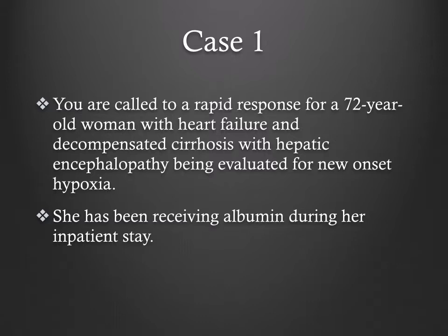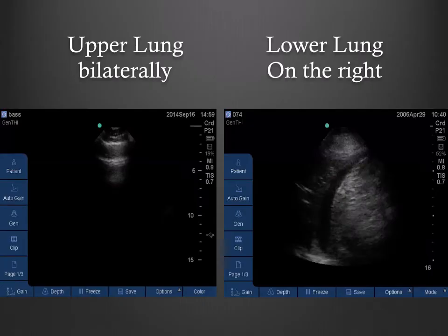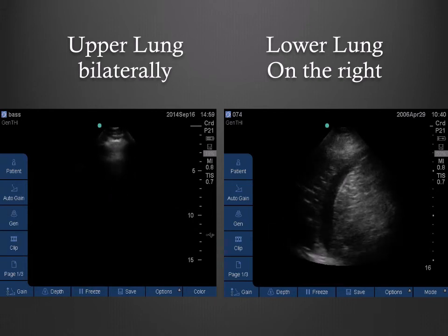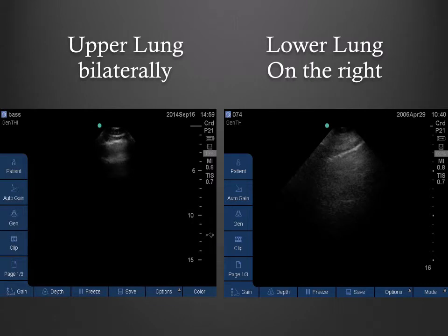Case 1. You are called to a rapid response for a 72-year-old woman with heart failure and decompensated cirrhosis with hepatic encephalopathy, being evaluated for new-onset hypoxia. Per her primary team, you note she has been receiving albumin during her inpatient stay. You place a probe on her chest and observe the following images. She has A-lines in the upper lung fields and what appears to be a consolidation in the right lower lung field, consistent with a right lower lobe pneumonia. Given these findings, you start empiric antibiotic therapy and avoid diuresing a patient with an already tenuous volume status.